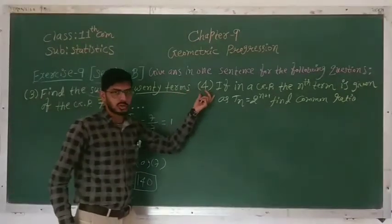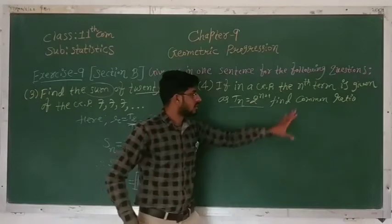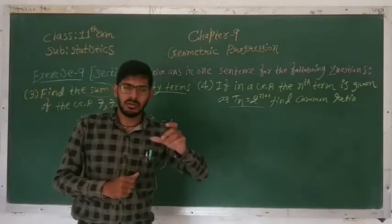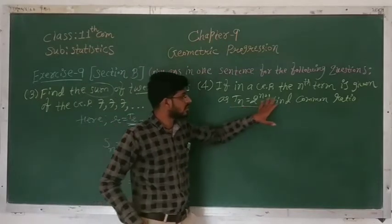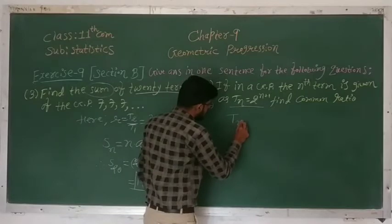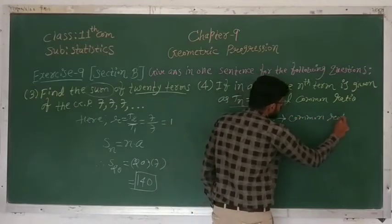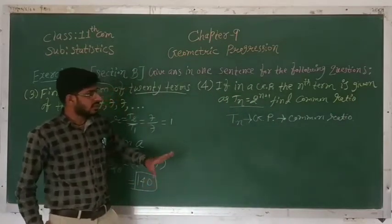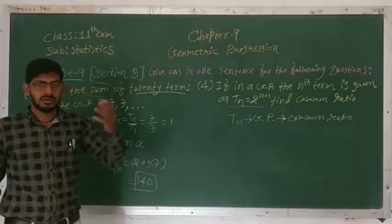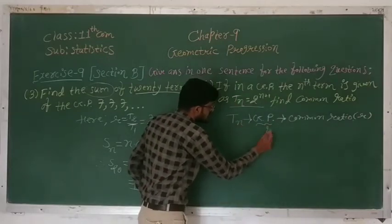Fourth question: if in a GP the nth term is given as t_n = 2^(n+1), find the common ratio. We cannot find the common ratio directly from t_n. First we need to find the GP from t_n, and then find the common ratio. To find the common ratio from the GP, we take the second term upon the first term.